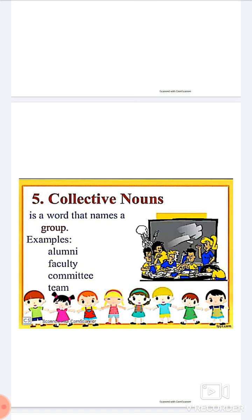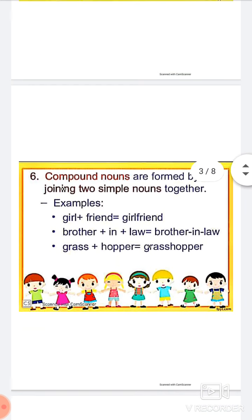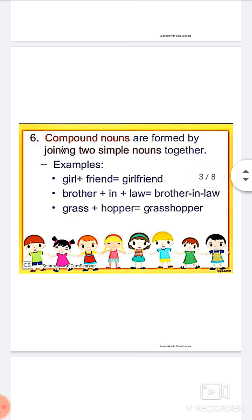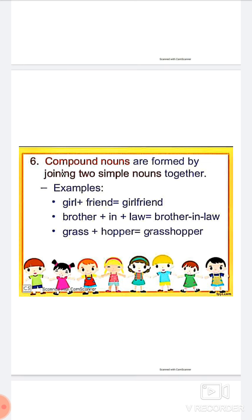More examples of collective nouns: a group of soldiers is called an army — this is also a collective noun. A crowd of people — a large gathering of people is referred to as a crowd. All these examples are included under collective nouns. Next: Sixth — Compound Nouns.